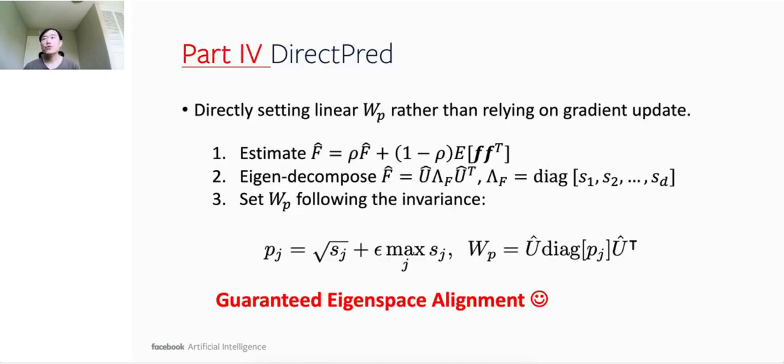Given all this analysis, a natural question arises. If we have been trying so hard to make the eigenspace of the predictor W_P and the correlation matrix F aligned, why not do this directly? After all, we have the freedom to choose which algorithm to be used to train the network. In this paper, motivated by our theory, we propose DirectPredict, a novel non-contrastive self-supervised learning method, by directly setting the linear predictor to be aligned with the eigenspace of the correlation matrix F. The algorithm is very simple. First, we keep an online estimation of the correlation matrix F using exponential moving average. This is possible for non-linear networks used in practice, such as ResNet-18 or ResNet-50.